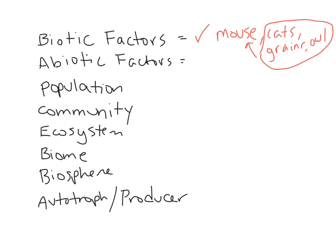Now what are some abiotic factors — the non-living things that will affect the mouse? Definitely water. Water is non-living, but without water the mouse would not be living. Temperature also affects the mouse. So abiotic factors are the non-living parts of an ecosystem which affect the living things — not just mice, they affect everything.